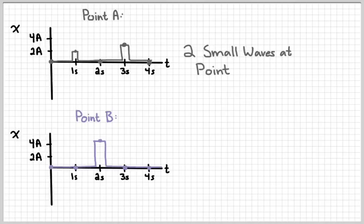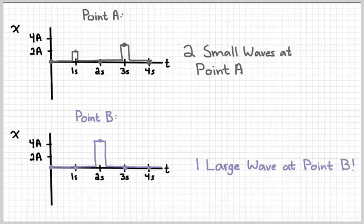So at point A, two small waves pass through the string. At point B, one large wave passes through the string — or whatever the medium might be. Drawing these pictures and graphs is nice, but it's really difficult to see what's going on in a static situation when these waves are actually moving over time.